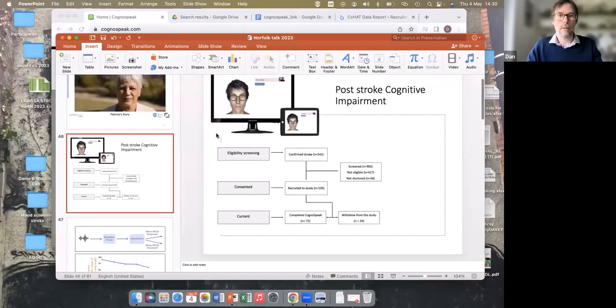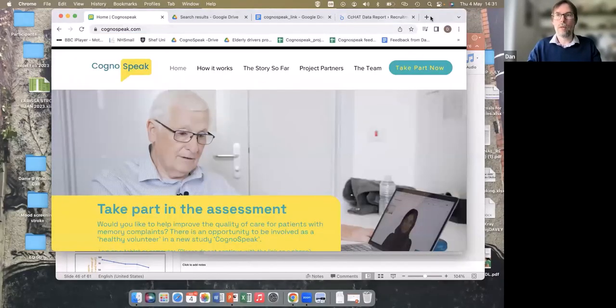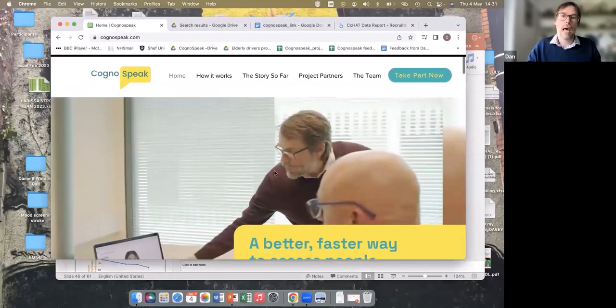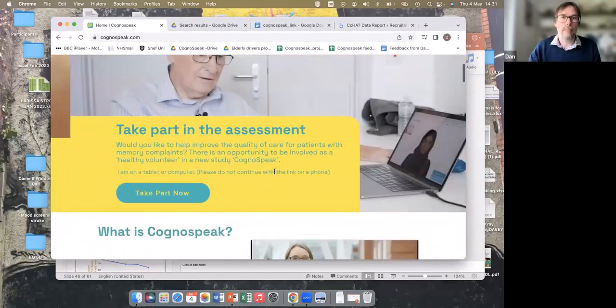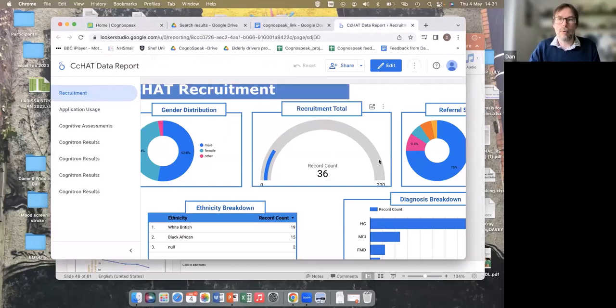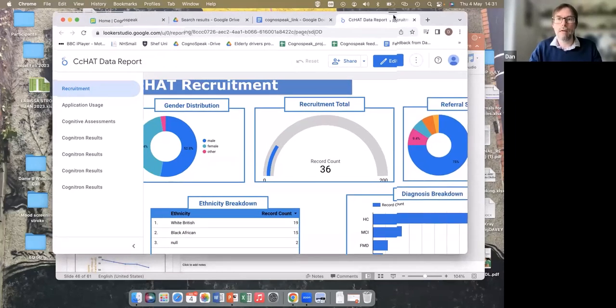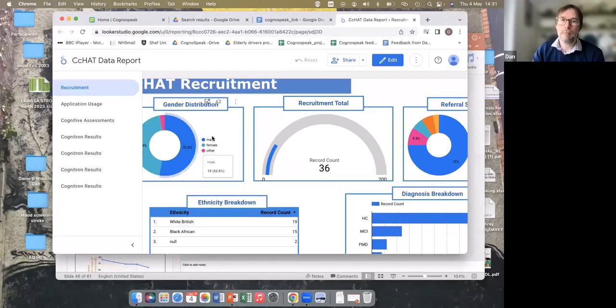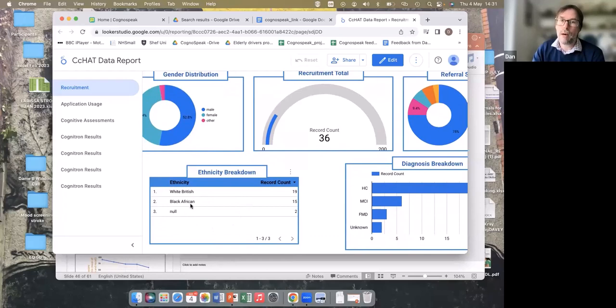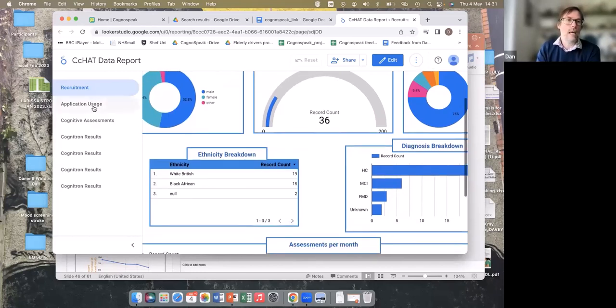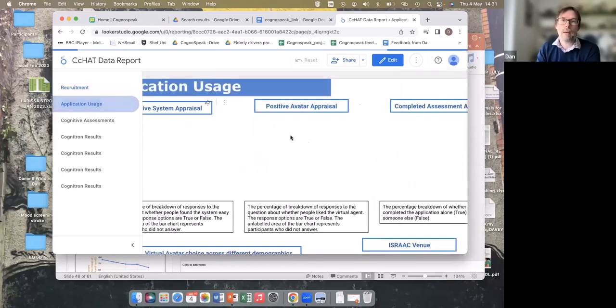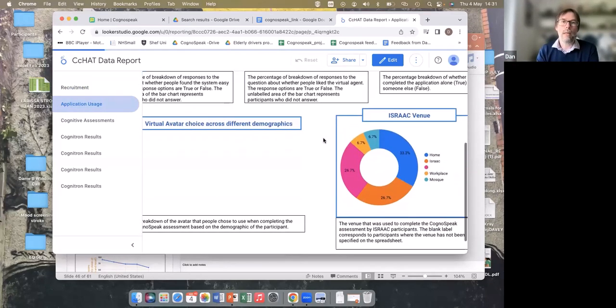And there's potentially a large saving if you save clinician time. And I'll just show you now. This is our website that people can now access. And if people are interested, they can click on and try the tool out themselves. And this is our current data report. So we're early days. We've been having the system open since January. We recruited 36 people. We can see our gender distribution of male and female. The recruitment from the Somali population is going well. So we've recruited 15 people. They're predominantly all healthy controls from the Somali population. We need to increase our recruitment of MCI. And we are recruiting people with a functional cognitive disorder.